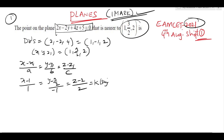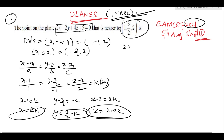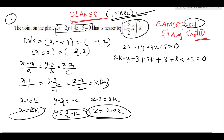Setting z minus 2 over 2 equals k, we get x = k + 1, y minus 3/2 = minus k so y = 3/2 minus k, and z minus 2 = 2k so z = 2 + 2k. Substituting these x, y, z values in the given plane 2x minus 2y plus 4z plus 5 = 0: 2(k+1) minus 2(3/2 minus k) plus 4(2+2k) plus 5 = 0, giving 2k + 2 minus 3 + 2k + 8 + 8k + 5 = 0.